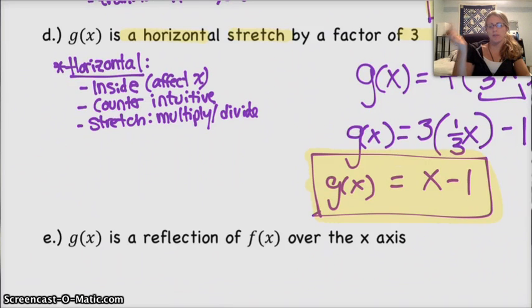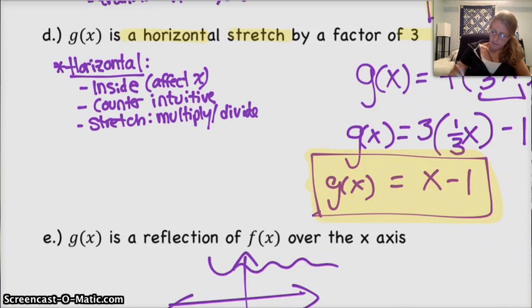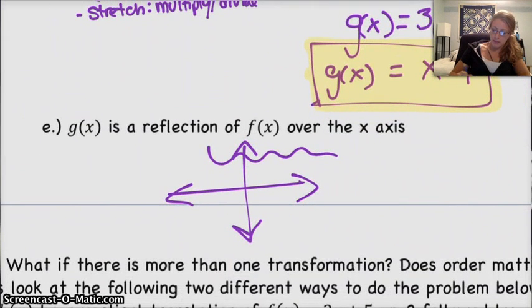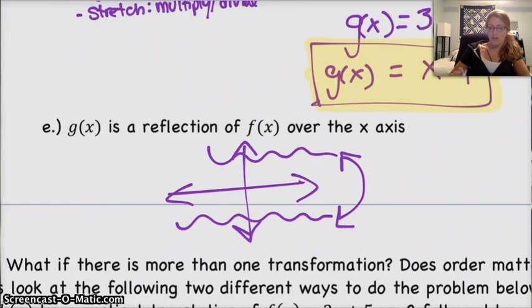Last problem. g of x is a reflection of f of x over the x-axis. This is one you really need to think about, because, originally, you'd think, oh, x-axis, it's gotta be horizontal. But, think about what you're actually doing. If you have a function and you reflect it over the x-axis, you're actually flipping it this direction. So, it's actually a vertical change, not a horizontal one. And so, in fact, since it's a vertical change, it's outside the function, because you're affecting y, and reflections are always negatives, because you're changing things by negatives, so, you just make f of x negative. The whole f of x.